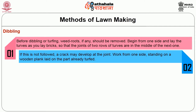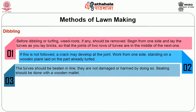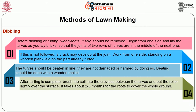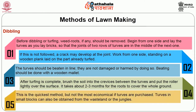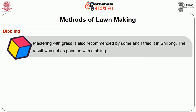Work from one side starting on the wooden plank laid on the part already turfed. The turfs should be beaten in line; they are not damaged by doing so. Beating should be done with a wooden mallet. After turfing is complete, brush the soil into the crevices between the turfs and put the roller lightly over the surface. It takes about 2 to 3 months for the roots to cover the whole ground. This is the quickest method but not the most economical if turfs are purchased. Turfs in small blocks can also be obtained from wasteland or jungles. Planting with the grasses is also recommended in some places.